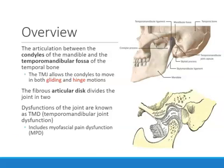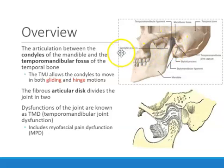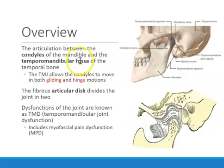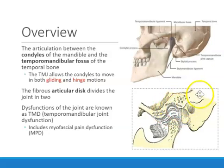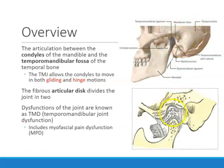Looking at the TMJ in more detail, it is the articulation between the condyle and the temporomandibular fossa. The mandible has a projection at the top — the one in the front is called the coronoid process, the one at the back is called a condyle, or condylar process. A fossa is a depression — you can see this depression, known as the mandibular fossa, right here as a little indentation.